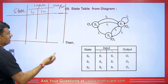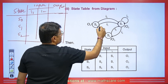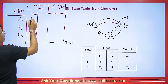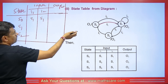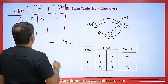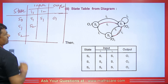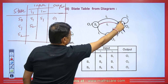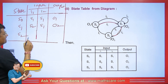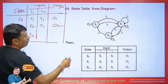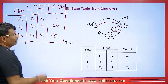We have states S0, S1, and S2. S0 is going to S1 — the input is I1, so we write S1 here. S0 is also going to S1 with input I2, giving output O1. S1 is going to S2 with input I1 and output O2. S1 making a self-loop with input I2 gives output O2. S2 going to S0 with input I1 gives output O3, and S2 going to S1 with input I2 gives output O3. This is how we make a table.